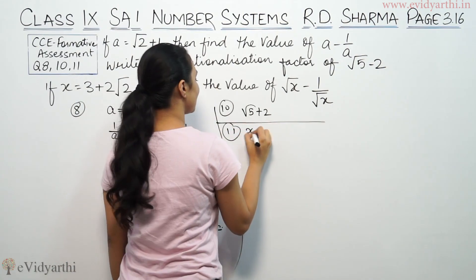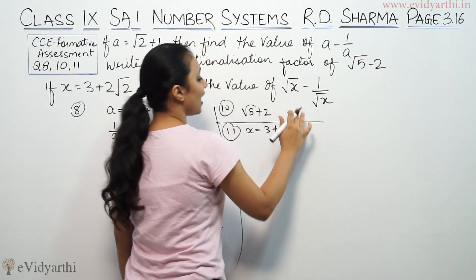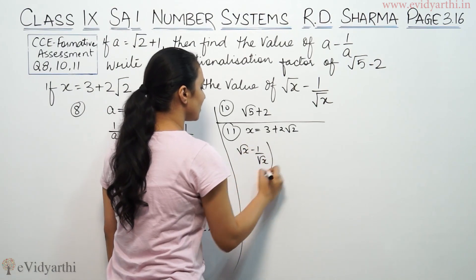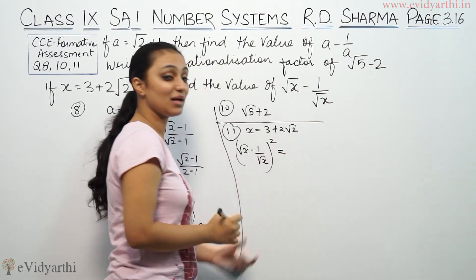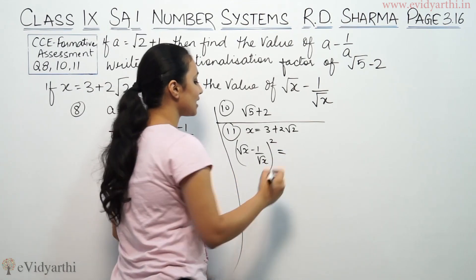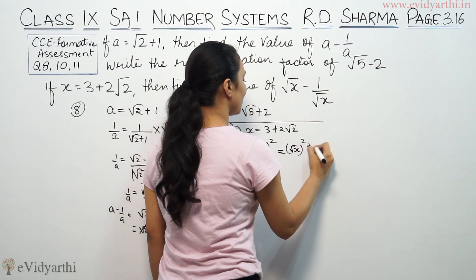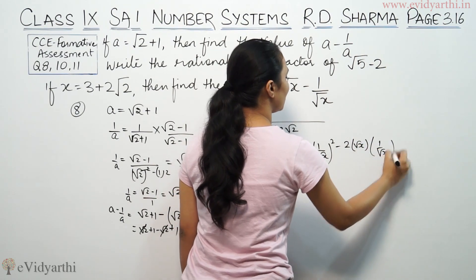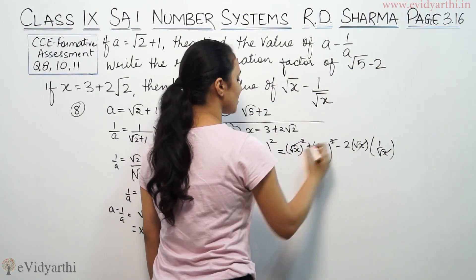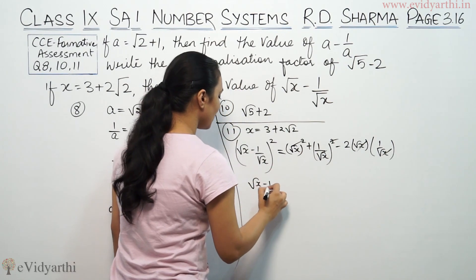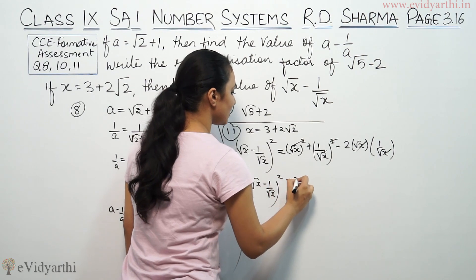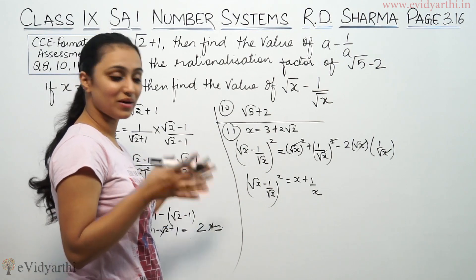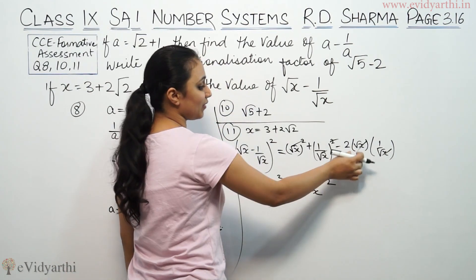Question number 11, if x is equal to 3 plus 2 root 2, find root x minus 1 by root x. So we take root x minus 1 by root x whole square. Using the formula a square plus b square minus 2ab, when we expand and cancel square roots, root x minus 1 by root x whole square equals x plus 1 by x minus 2. Now we'll find the value of 1 by x to substitute.